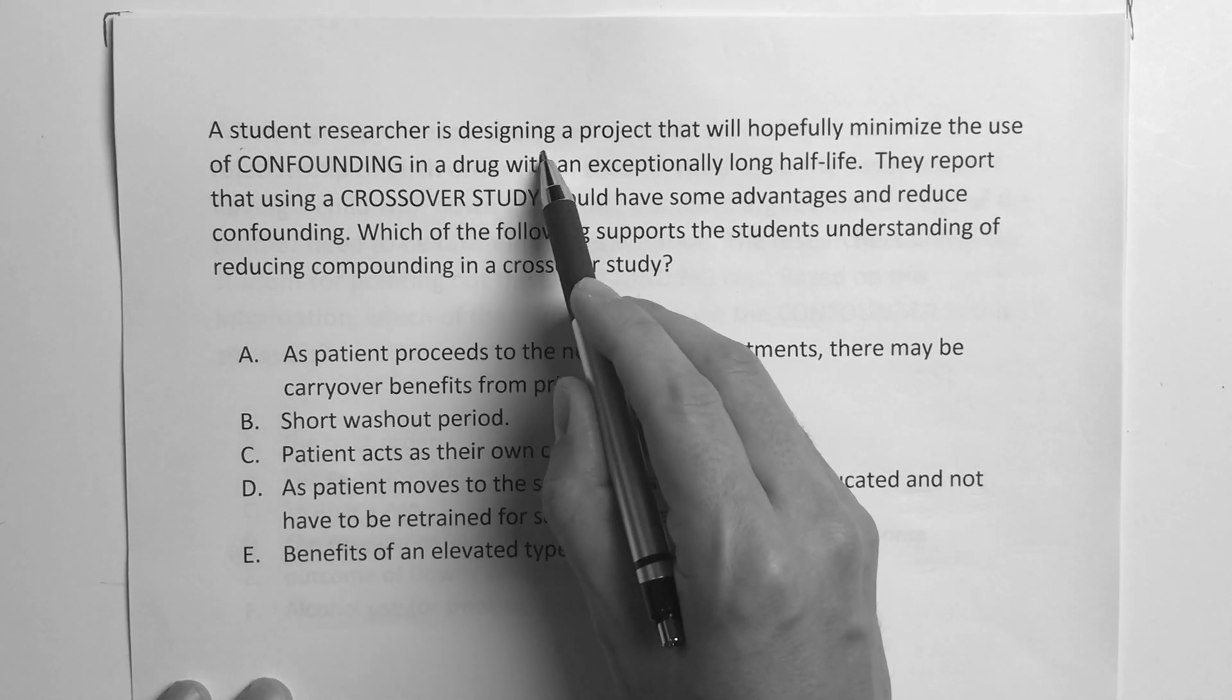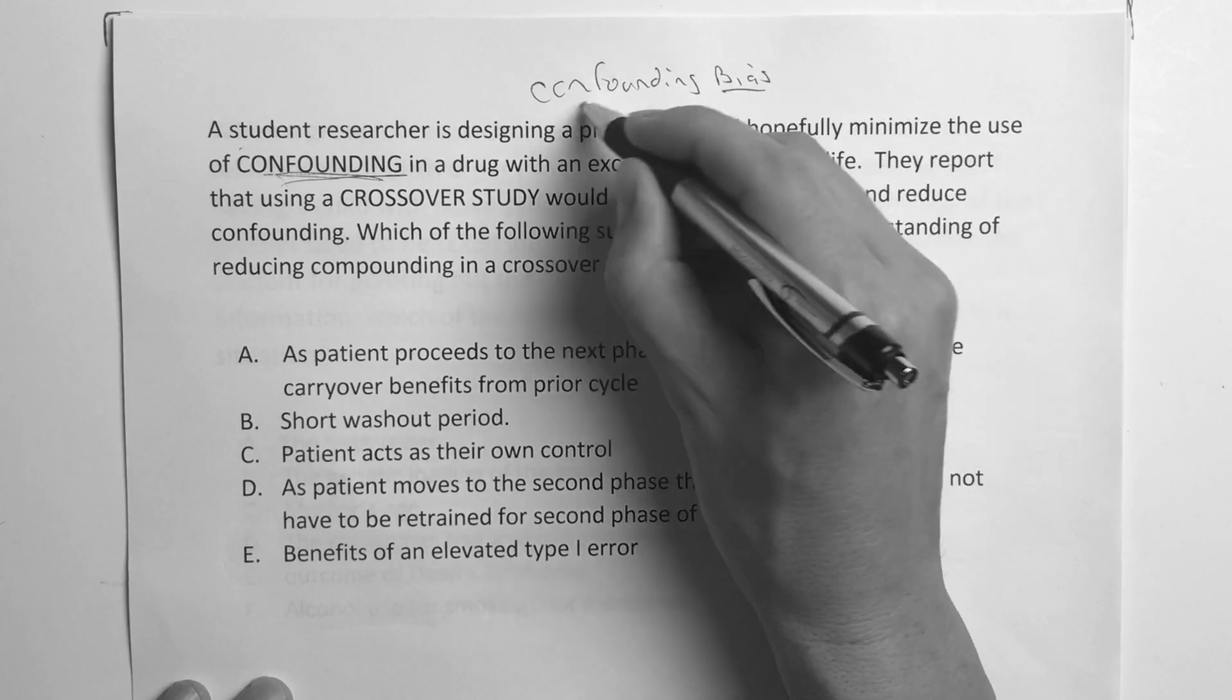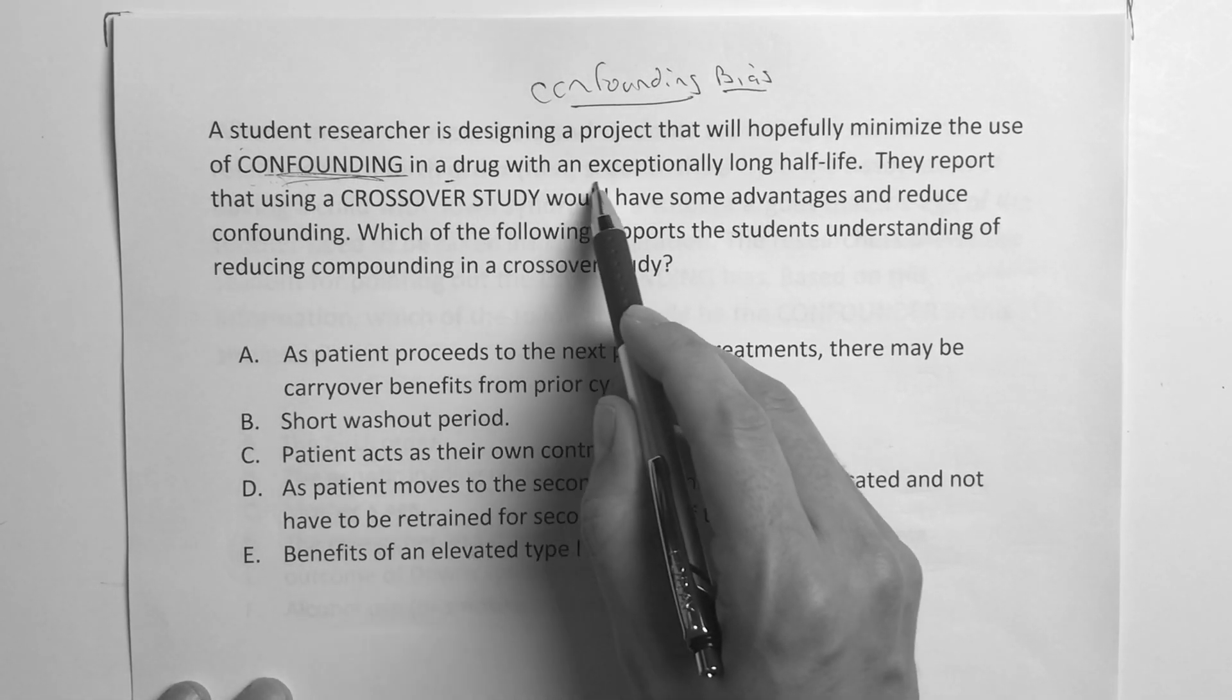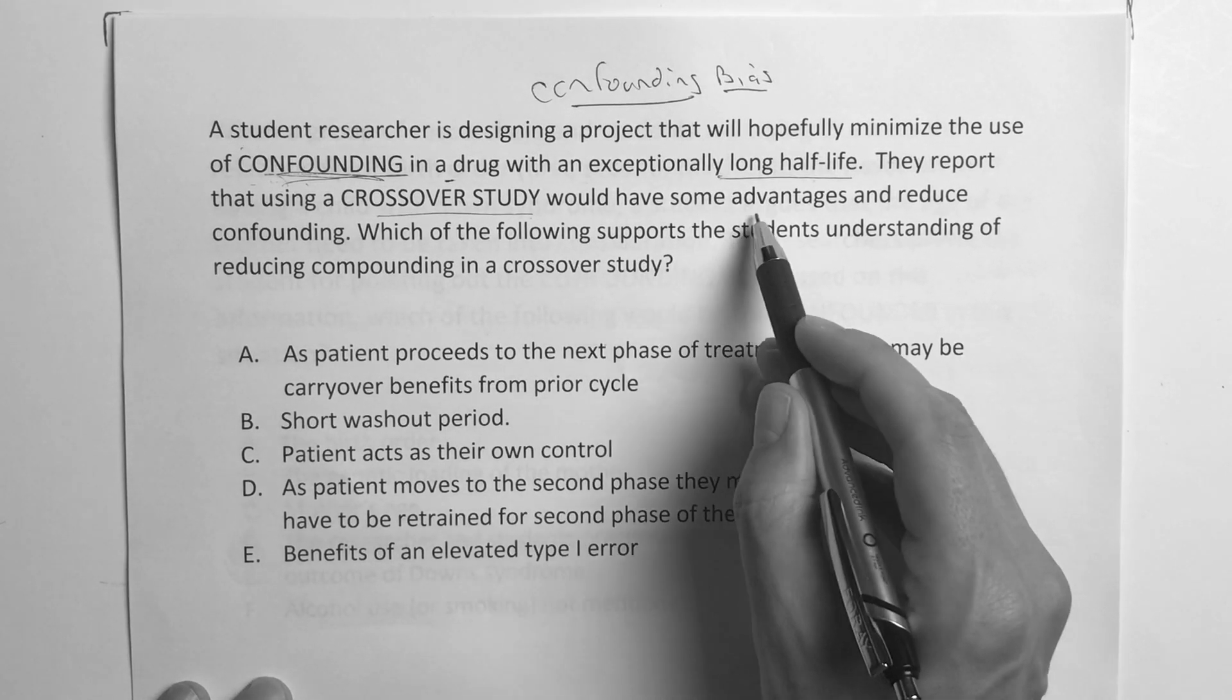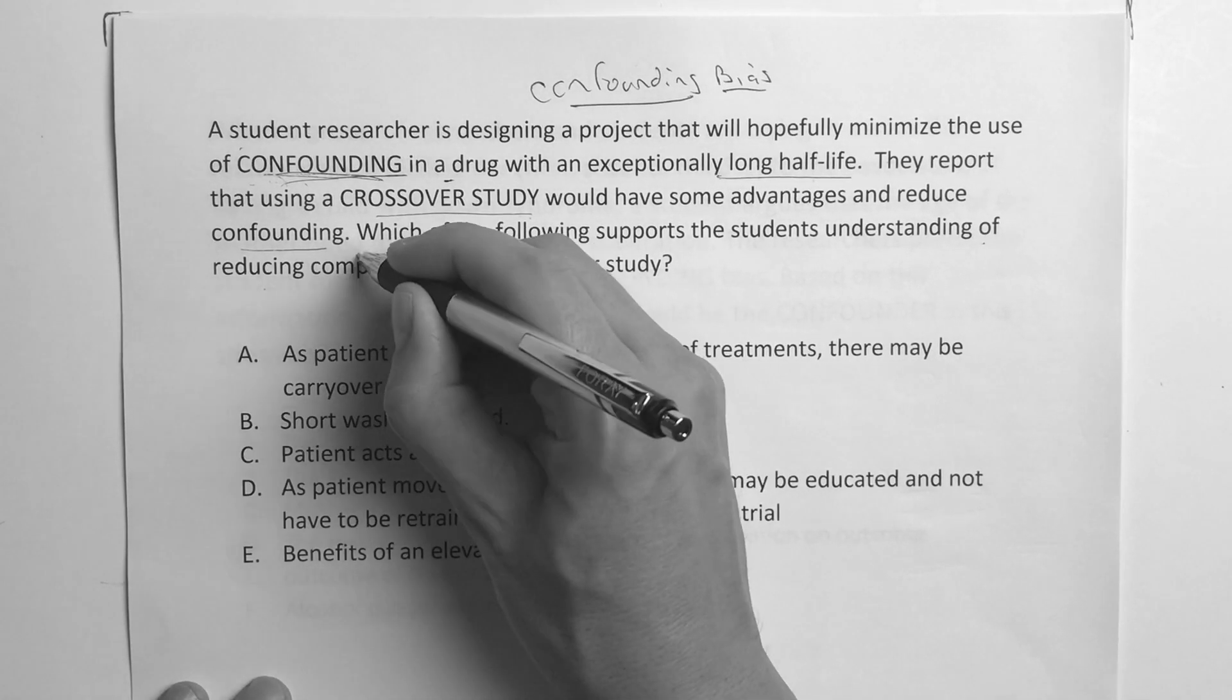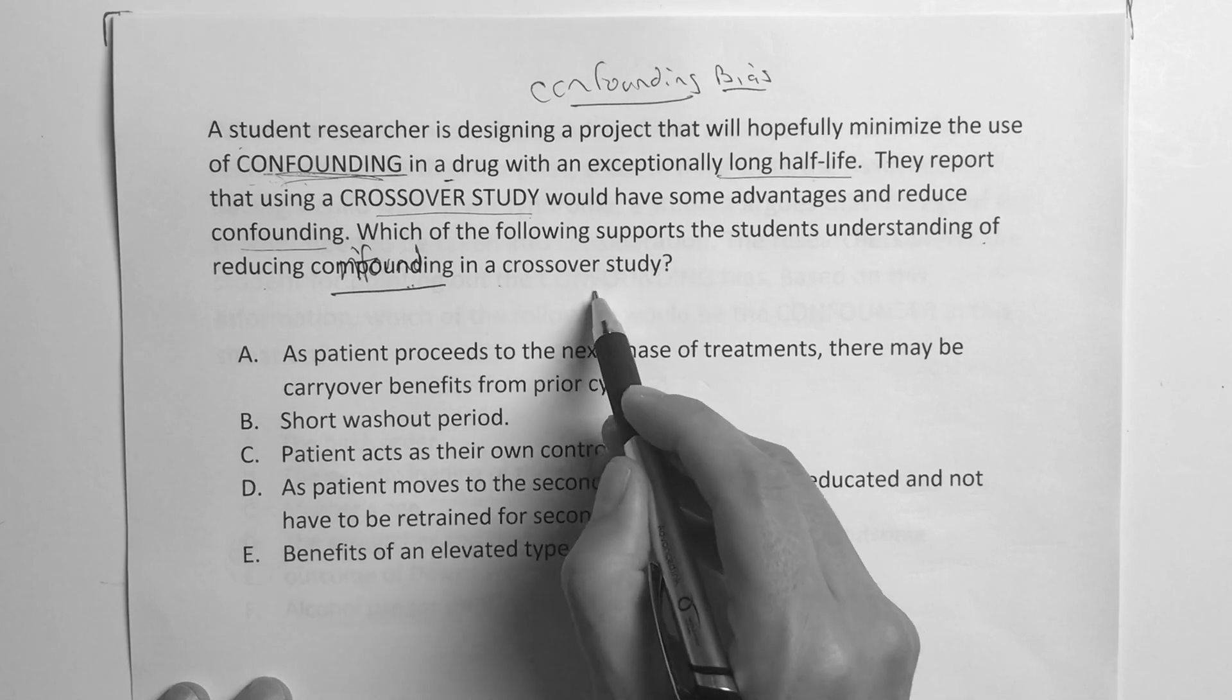This one says, a student researcher is designing a project that will hopefully minimize the use of confounding. I'll say this, confounding's huge. They like to use that word, confounding bias or confounders, on step one exams. Confounding in a drug with exceptionally long half-life. They report that using a crossover study would have some advantages and reduce confounding. Which of the following supports the student's understanding of reducing confounding? Well, first of all, we've got to understand a crossover study.